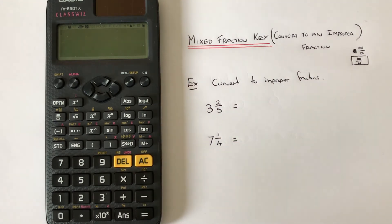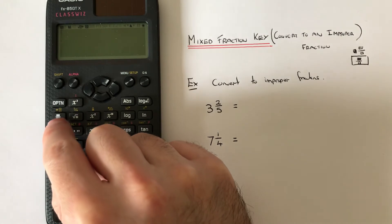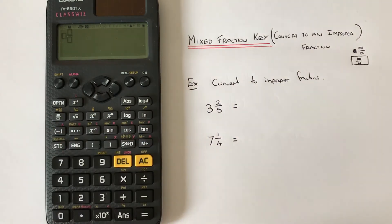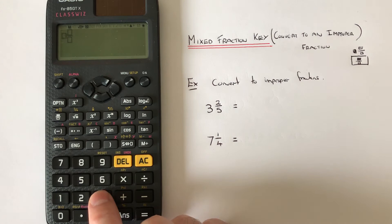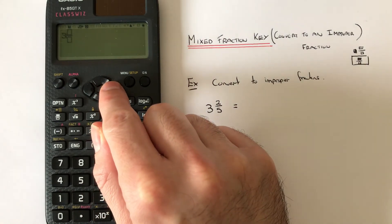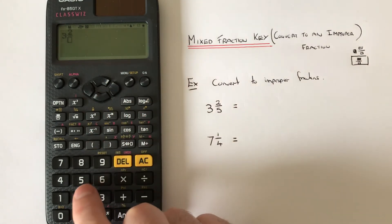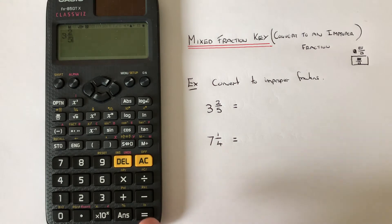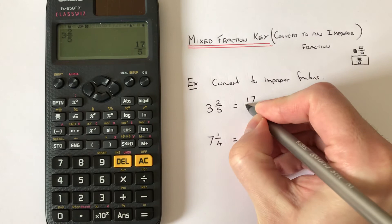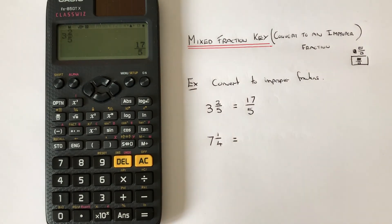So let's have a look at the two examples. The first one is 3 and 2/5. Press the mixed fraction key — Shift then Fraction — then type in 3, press the right key, type in the numerator 2, press the right key again, then the denominator 5, and press Equals. It will convert it into an improper fraction.